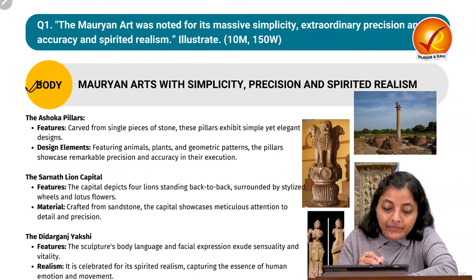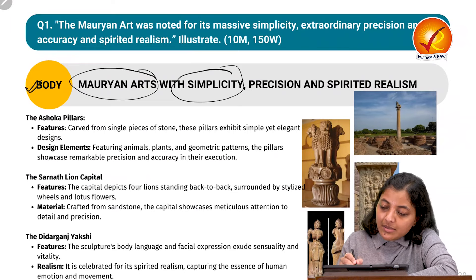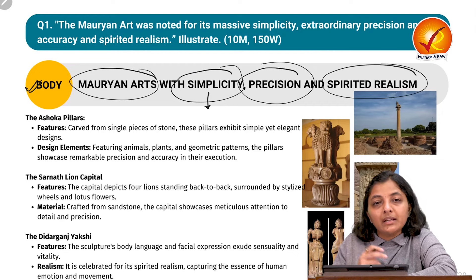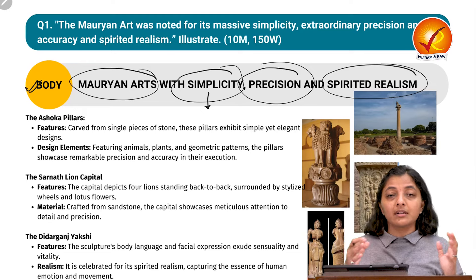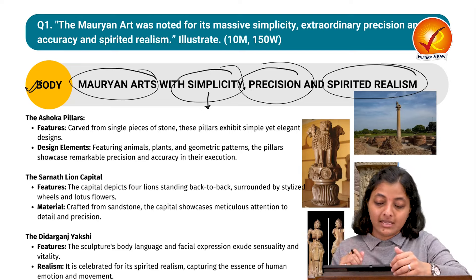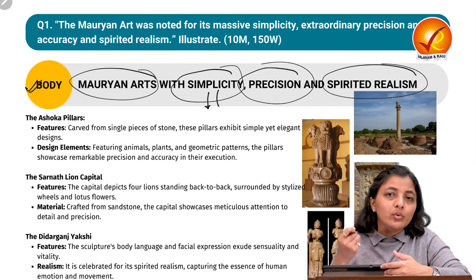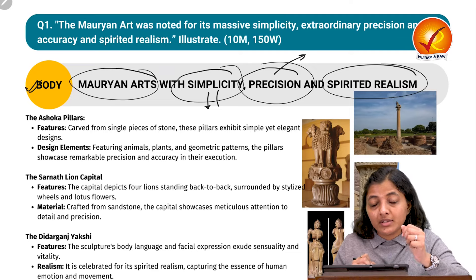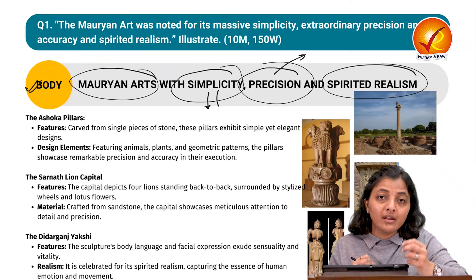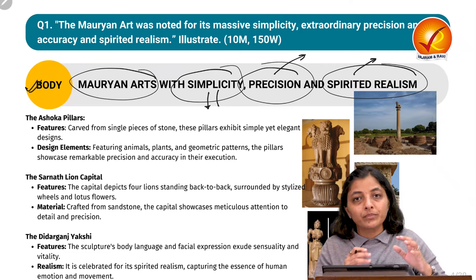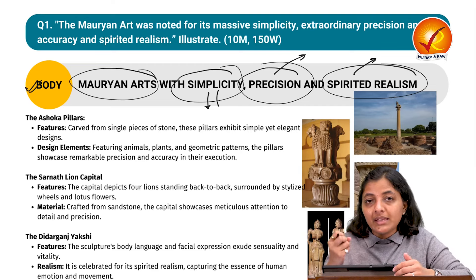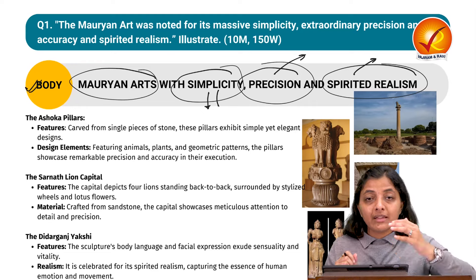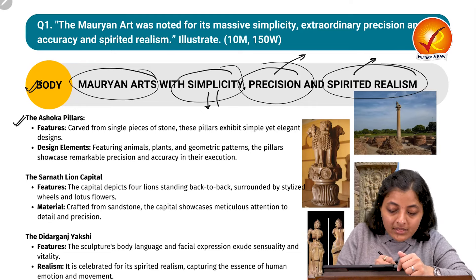Starting with the body part: massive simplicity means their palaces, stupas, and caves were grand and massive in scale but not overly decorated or engraved. Precision and accuracy means the architectural forms had accuracy in their construction. Spirited realism refers to the sculptures and relief features — the idols being made had an element of reality, movement, and motion in them.